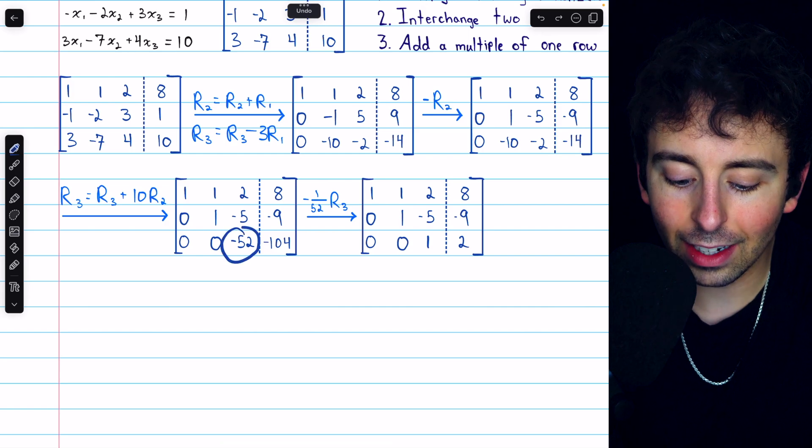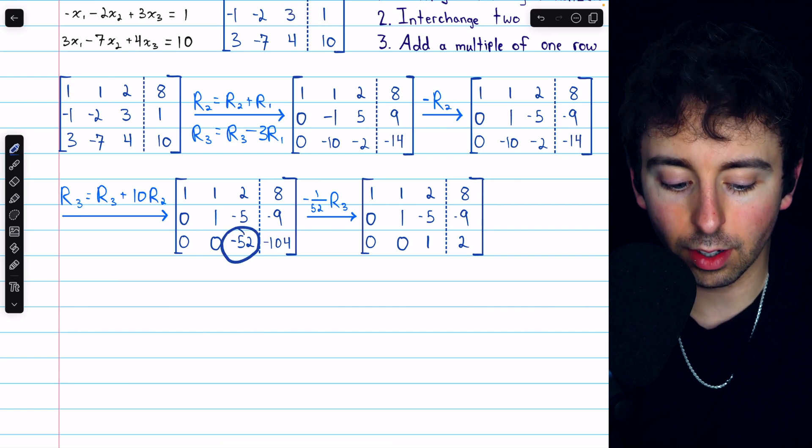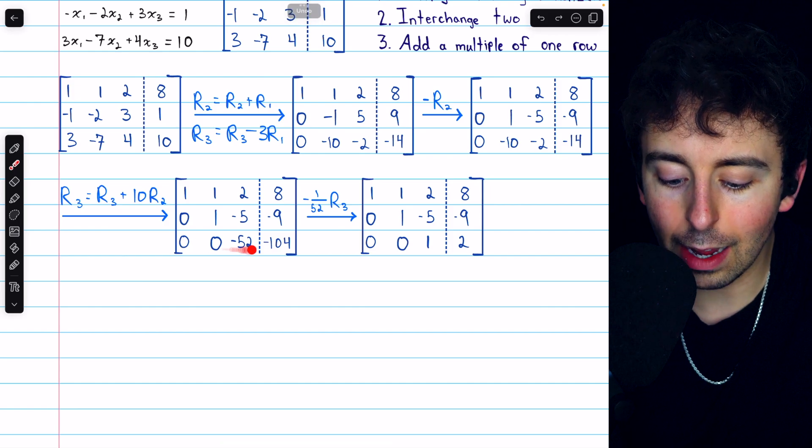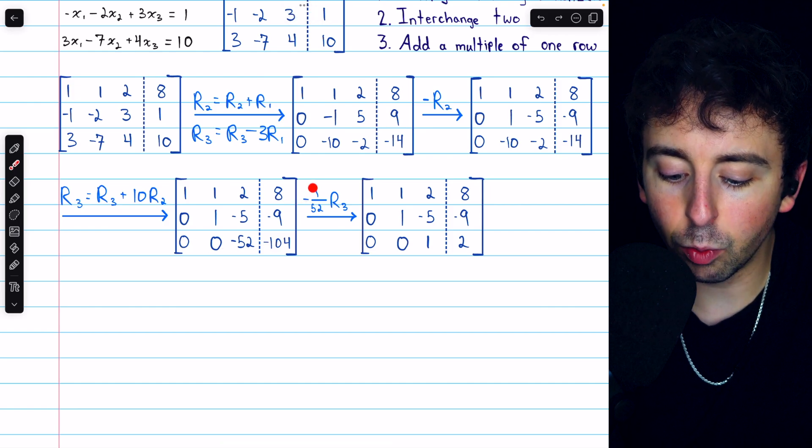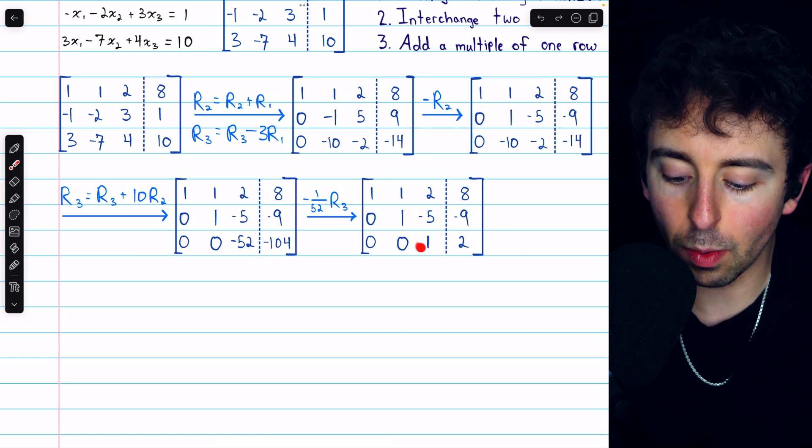Now here on the diagonal, we have a negative 52. We want it to be positive 1. So we'll multiply row 3 by negative 1 over 52. That turns this negative 52 into a positive 1, and it turns this negative 104 into a positive 2.